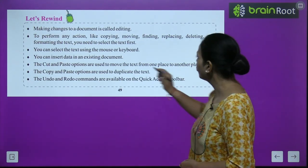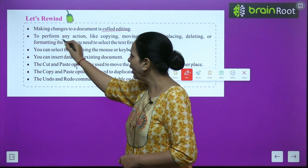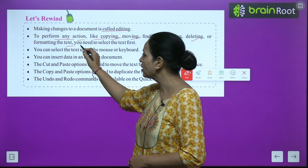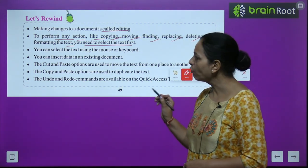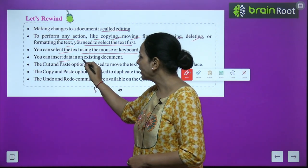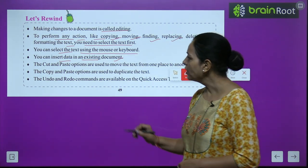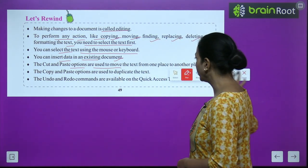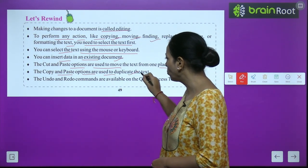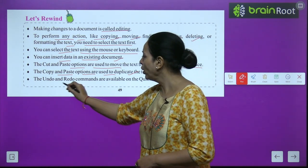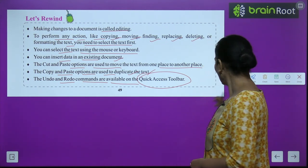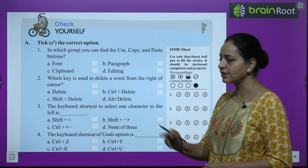Let us rewind: Making changes to a document is called editing. To perform any action like copy, moving, finding, replacing, deleting or formatting the text, you need to select the text first. You can select text using the mouse or keyboard. You can insert data in an existing document. Cut and paste are used to move text; copy and paste are used to duplicate text. Undo and Redo commands are available on the Quick Access Toolbar.